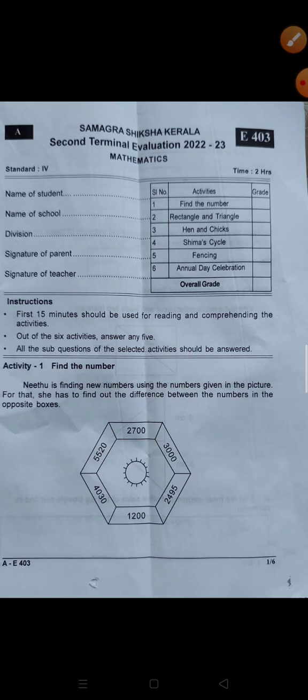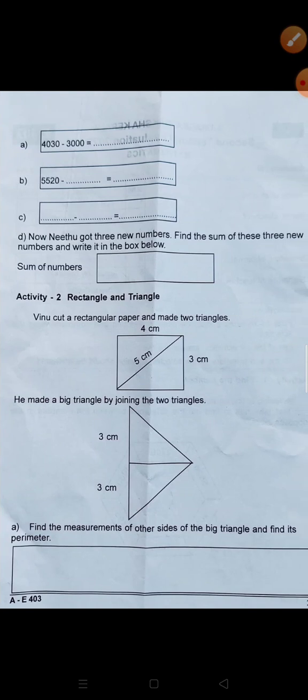First activity is Find the Number. You are finding new numbers using the numbers given in the picture. She has to find out the difference between the numbers in the opposite boxes. If you have to find the numbers in the opposite sides, there is a difference in the opposite sides. The first difference is 4030 and 3000.